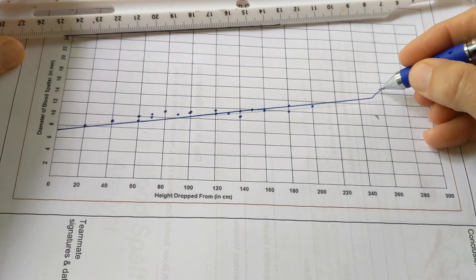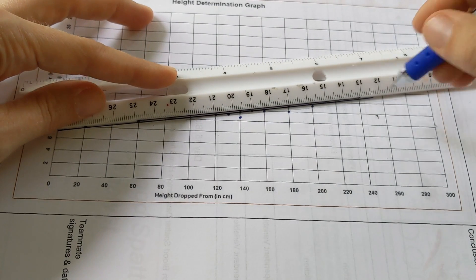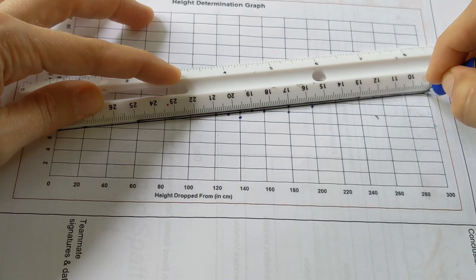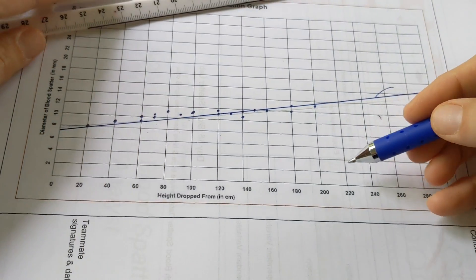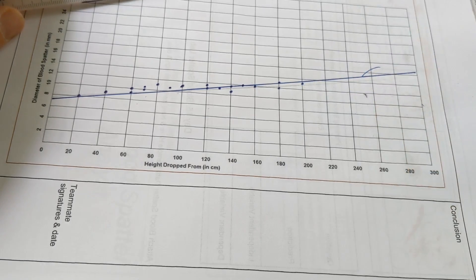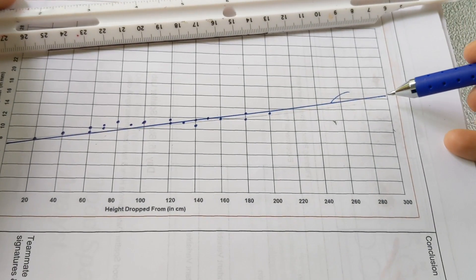We could actually continue the trend, even though the highest point that I was able to drop from was 200 centimeters, two meters in height, because my hand wouldn't reach any farther. We can still estimate how big it would be if I dropped it from 300 meters in height.